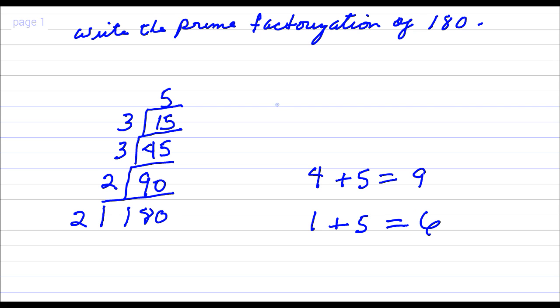Okay, so 180, the prime factorization is 2 times 2 times 3 times 3 times 5.